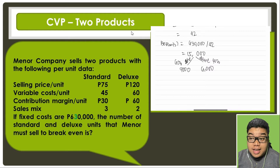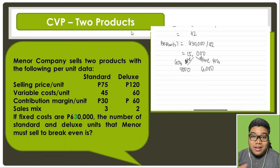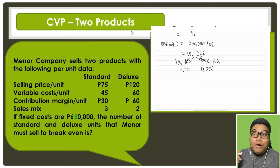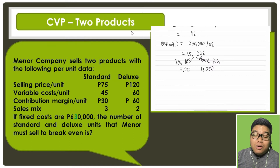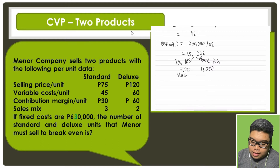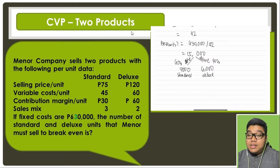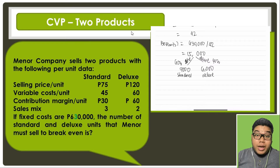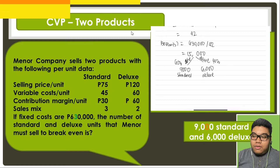Note that if we were to change this so that we had a higher share of deluxe units than standard, the effect on the break-even point would actually be a decrease, because we would have more units sold on the item in the mix with the higher contribution margin. So here we have 9,000 standard units and 6,000 deluxe units as the break-even mix.